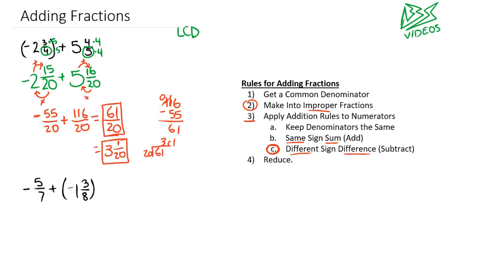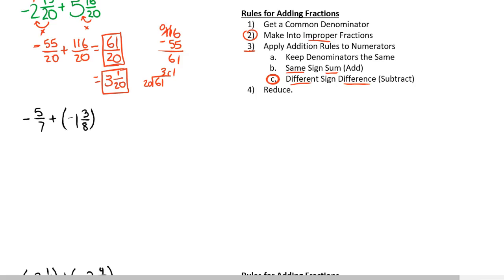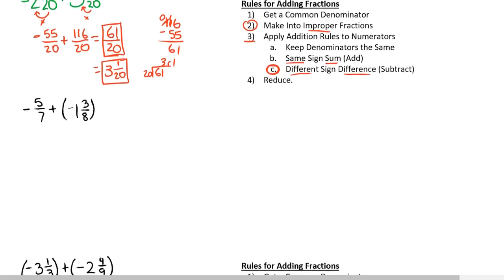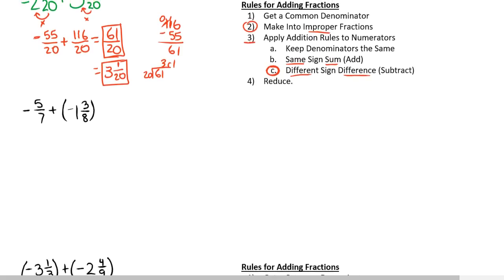Let's apply these similar rules to the next problem. We need to get a common denominator. The first number that 7 and 8 can go into at the same time is 56, which is just 7 times 8.